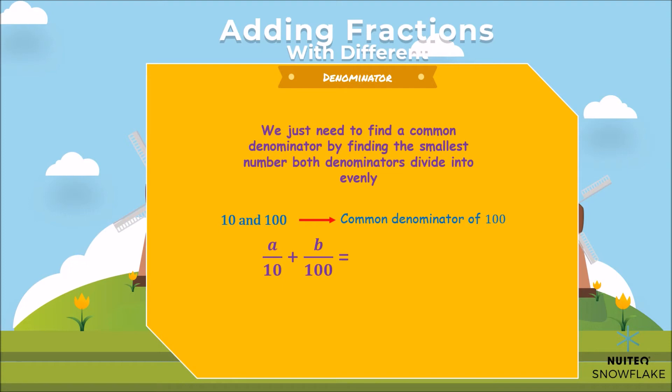Therefore, we manipulate a over 10 by multiplying the numerator and denominator by 10, to get 10a over 100. We don't have to do anything to b over 100, because we already have the common denominator of 100.